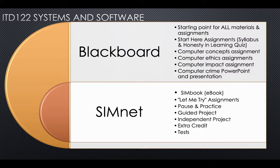The next three assignments — guided, independent, and extra credit — are considered labs. The instructions, start file, and any resource files will be in SimNet. There is a video on how to do that. This covers the guided, independent, and extra credit labs. You are allowed three tries to get your best grade.